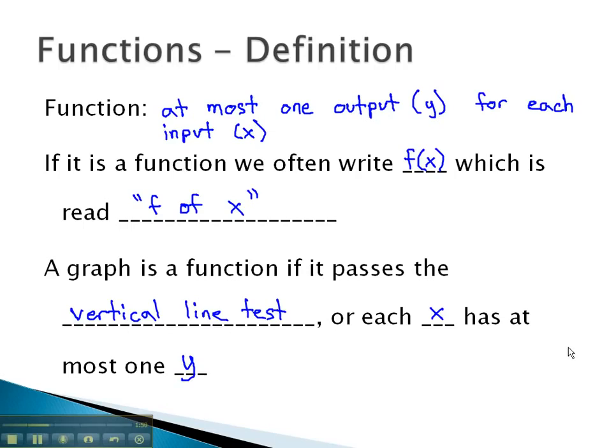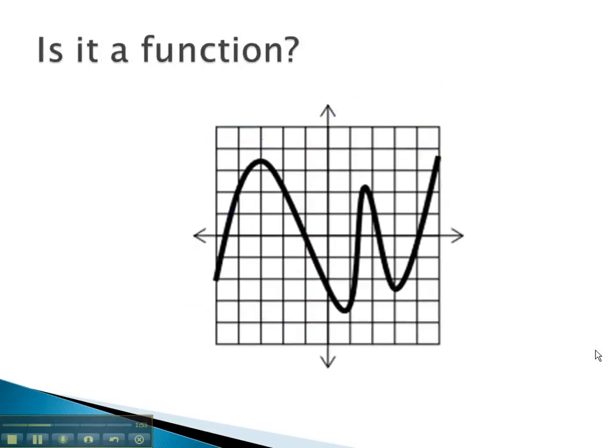For example, if we consider this graph, and we want to know if it's a function, what we're really asking is, does any x value, for example this point, have more than one output?